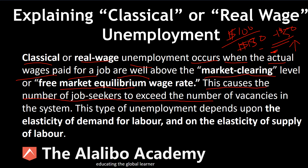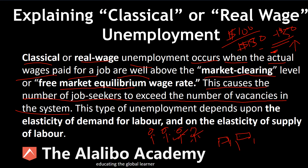This causes the number of job seekers to exceed the number of vacancies in the system, because so many people are competing for those positions. For example, if there are only two positions but four people going for them, two will be employed and two will not — and those two not employed are classically unemployed.